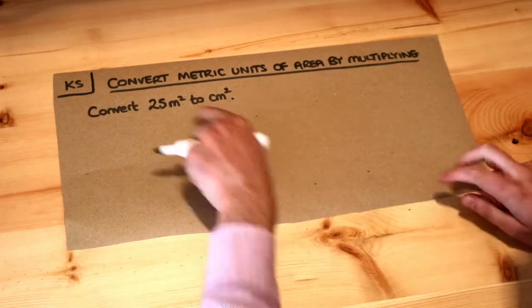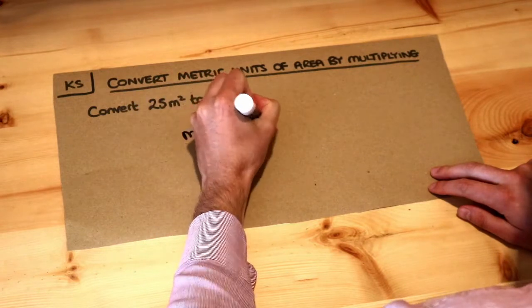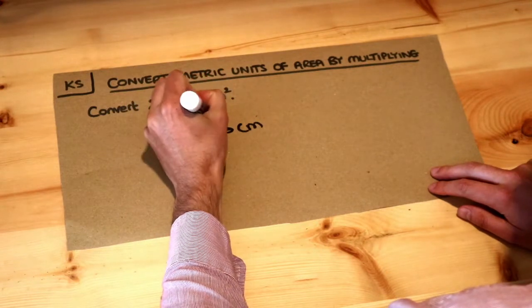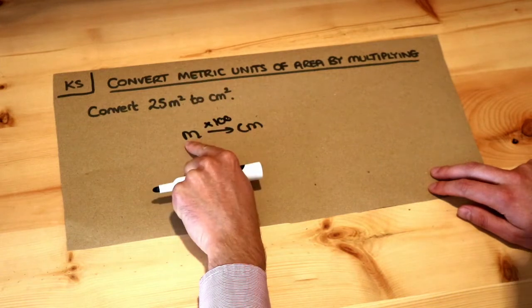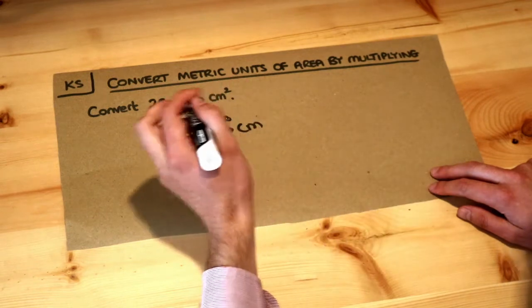Now we know how to convert from metres to centimetres. If we were going from metres to centimetres we would times by 100. So for example, if we had 2 metres we'd times by 100 to get to 200 centimetres.